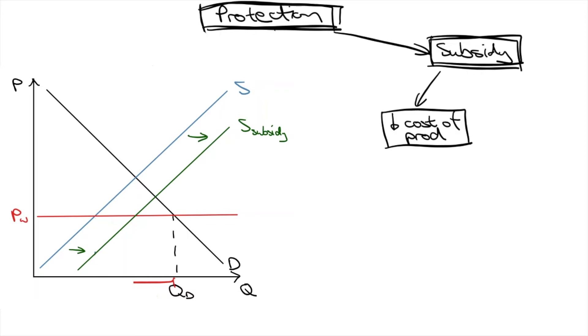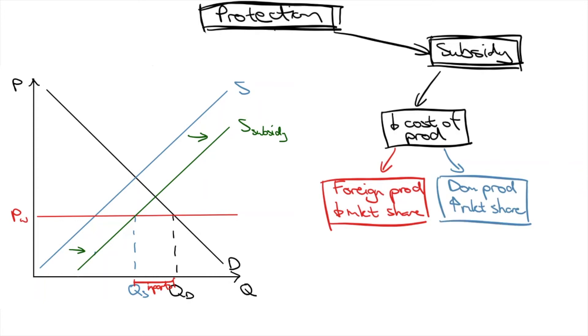Shifting the domestic supply curve to the right makes the import gap smaller, meaning that domestic producers get to increase the market share over foreign competitors. Their changes in revenue can also be seen in this diagram. As you can see, foreign producers decrease in revenue while domestic producers increase theirs.